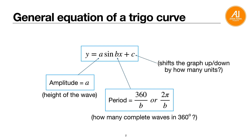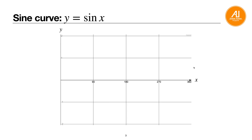The 'plus c' term shifts the graph up or down by a given number of units. For example, plus one shifts the whole graph up by one unit, while minus two shifts the whole curve down by two units.